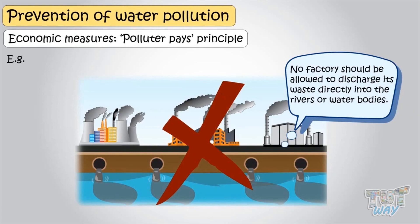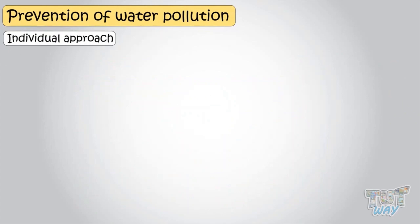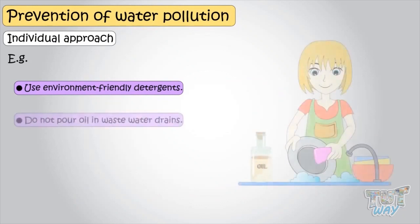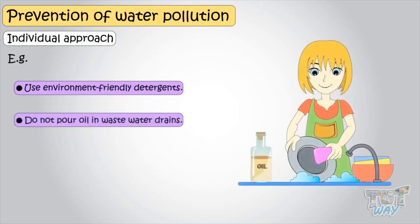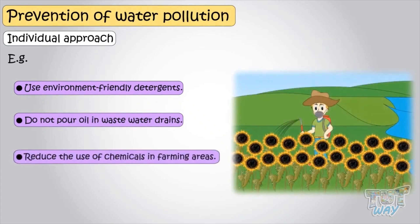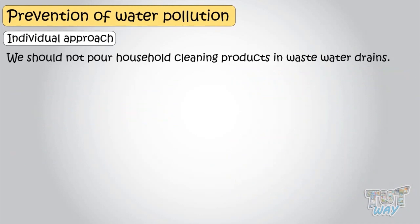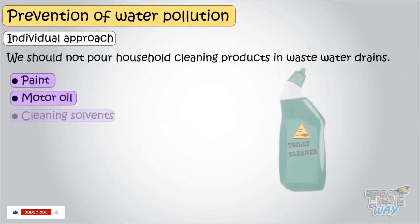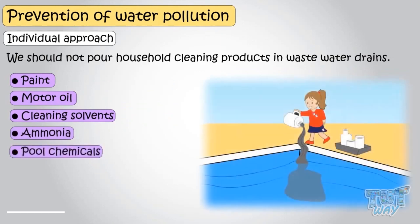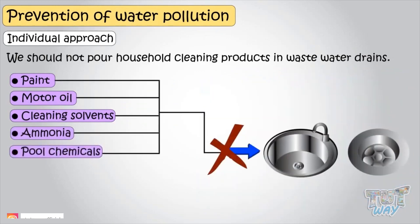Now let's learn what steps we as individuals can take to reduce water pollution. We should use environment-friendly detergents. We should not pour oil into wastewater drains. We should reduce the use of pesticides, weedicides, and fertilizers in farming areas. We should not pour household cleaning products like paint, motor oil, cleaning solvents, ammonia, or pool chemicals into drains, as drains ultimately lead to water bodies.